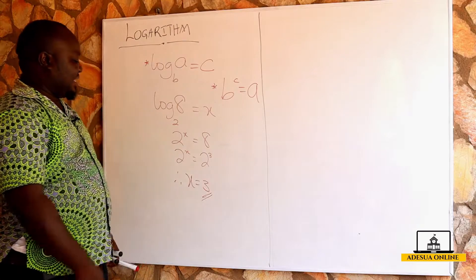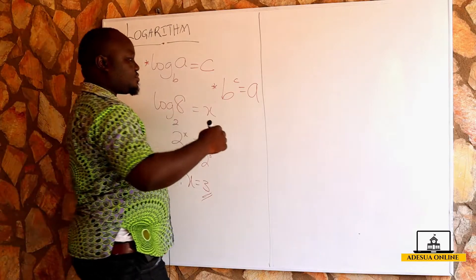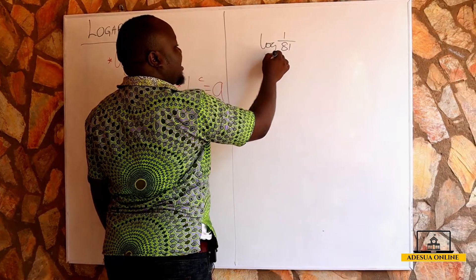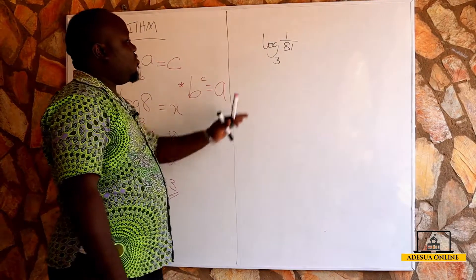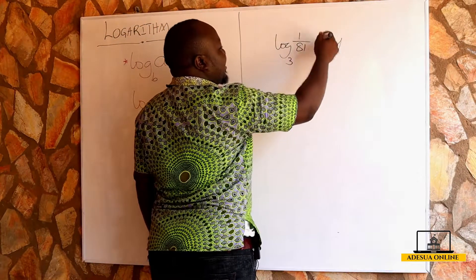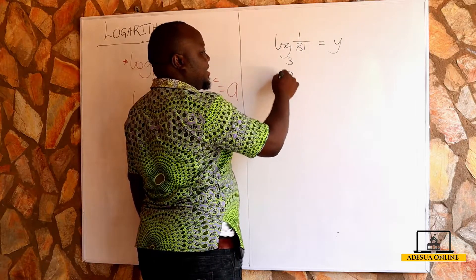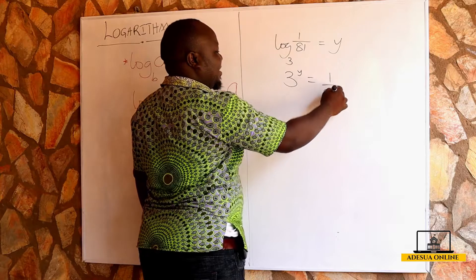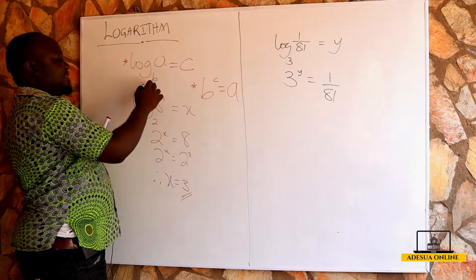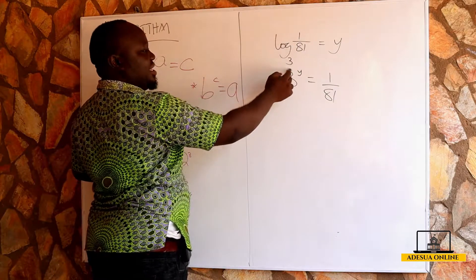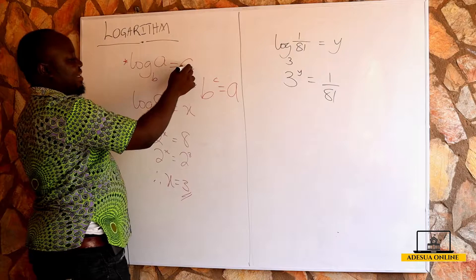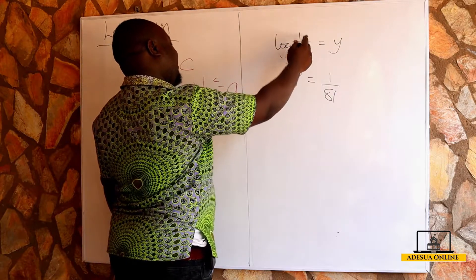Let's pick another example. If I have log of 1 over 81 to the base 3, I ask: what power do I have to raise 3 to in order to get 1 over 81? Let's equate this to y and solve for y. By definition, I can write 3 raised to the power y is equal to 1 over 81.